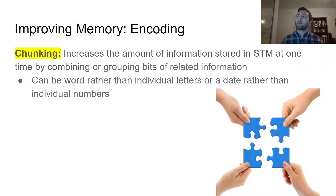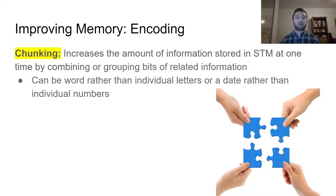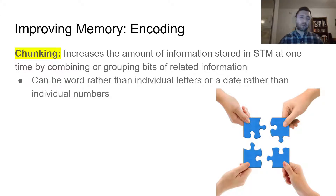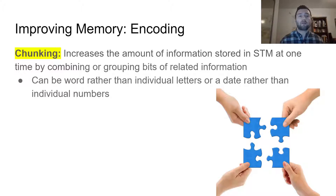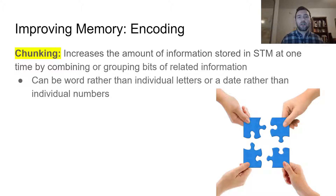The first things we're going to talk about all have to do with improving our memory through encoding — basically encoding the information better to begin with so that helps us remember it better later on. The first way we can do this is called chunking. Chunking is very straightforward and something you probably use all the time. We increase the amount of information we can hold in short-term or working memory by combining or grouping items into connected chunks of information.